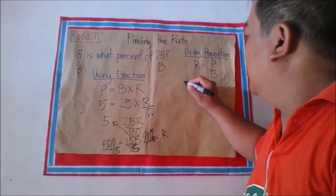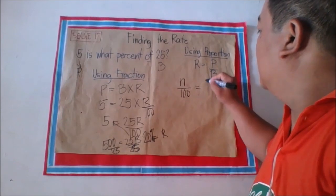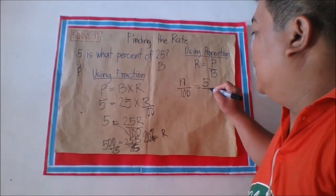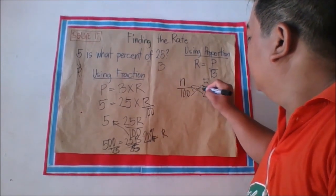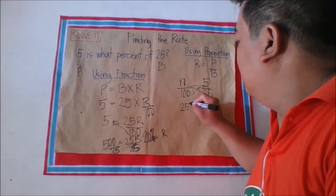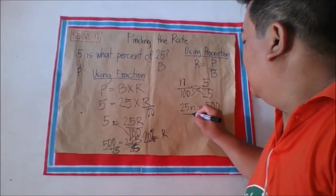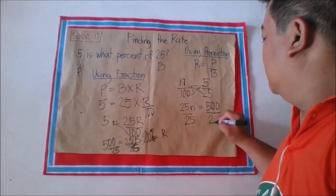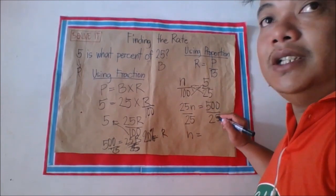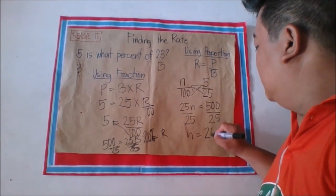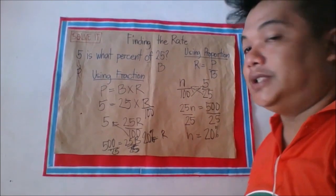Using proportion to find the rate: rate is N over 100, percentage is 5, and base is 25. Using cross products: 25 times N is 25N, and 5 times 100 is 500. To get N, divide both sides by 25. So 25N divided by 25 equals N, and 500 divided by 25 equals 20. Since this is the rate, we put a percent symbol, so the rate is 20%.